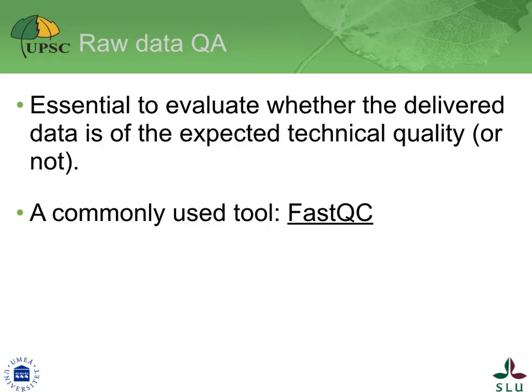The initial step is a quality assessment of the raw data. A commonly used tool is FastQC. FastQC is run on a FastQ file or a set of files and generates an HTML report. This report has numerous aspects, which details can be found on the tool's web page. Three of these are of particular relevance for us, and I will describe them in the next slides. The examples shown are from a real dataset we worked with.